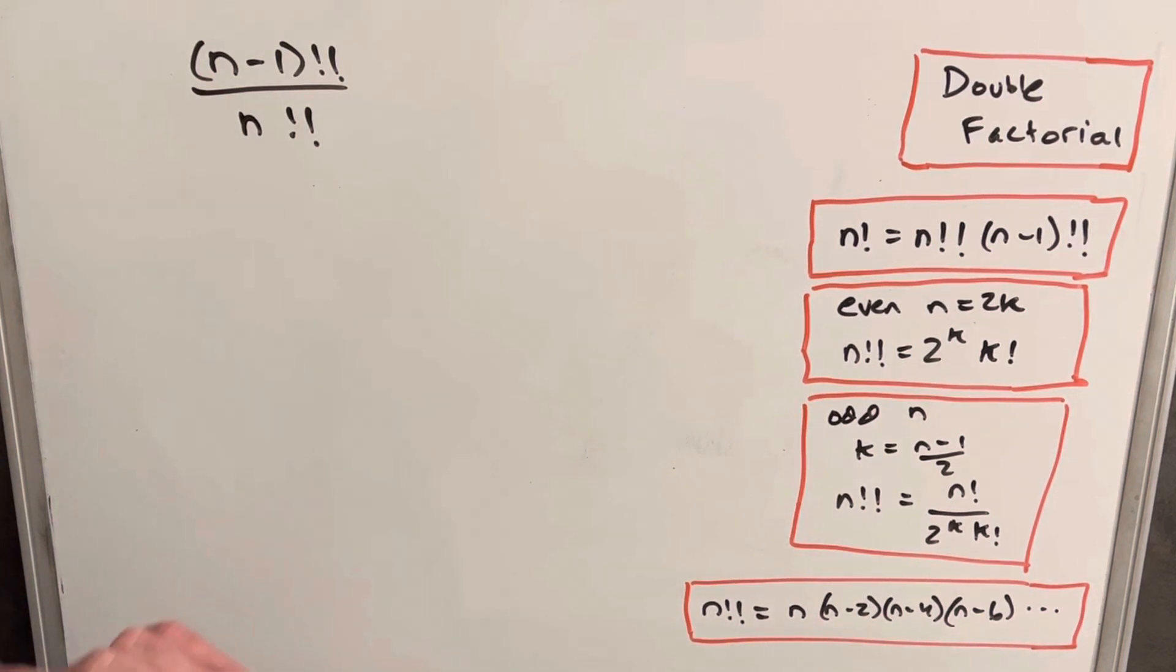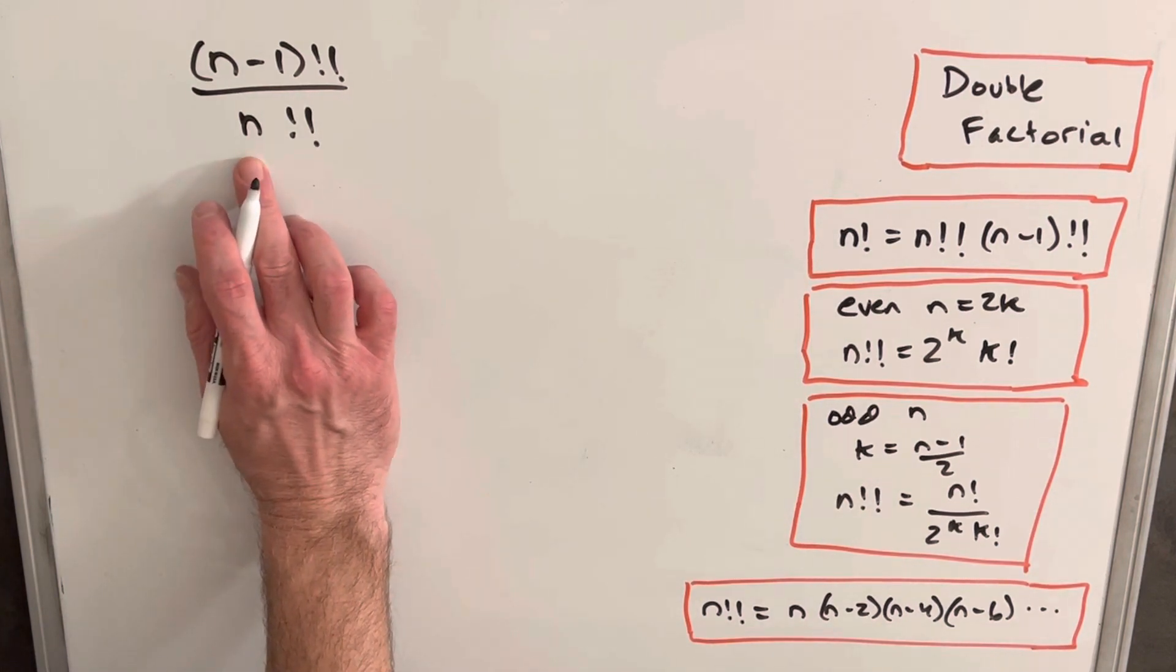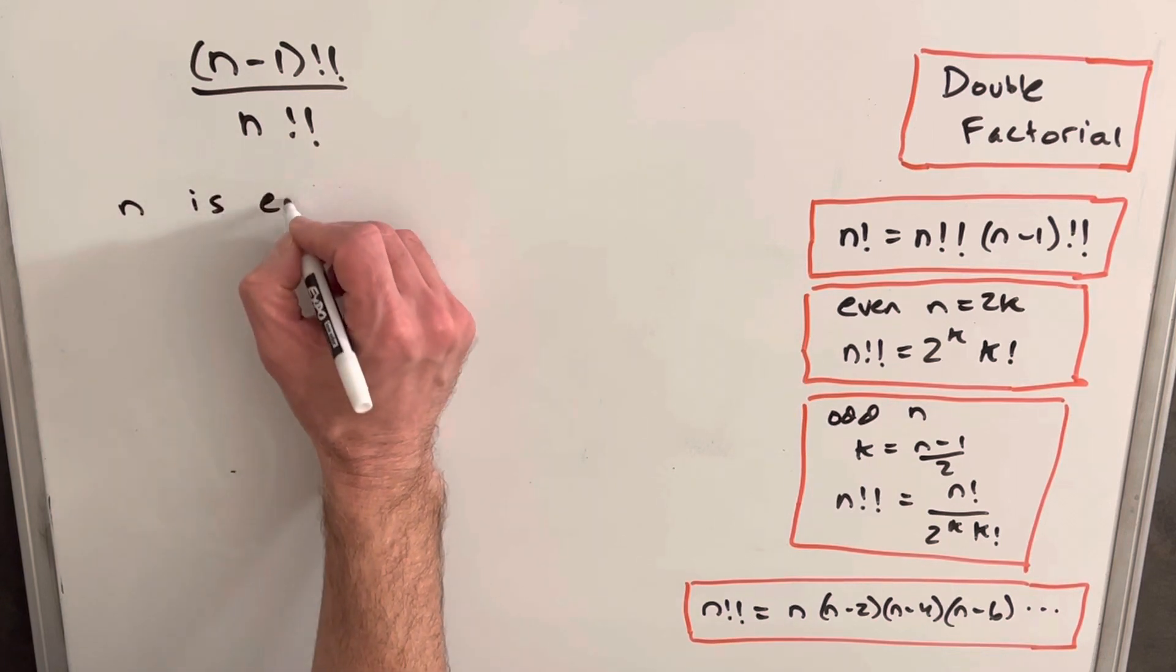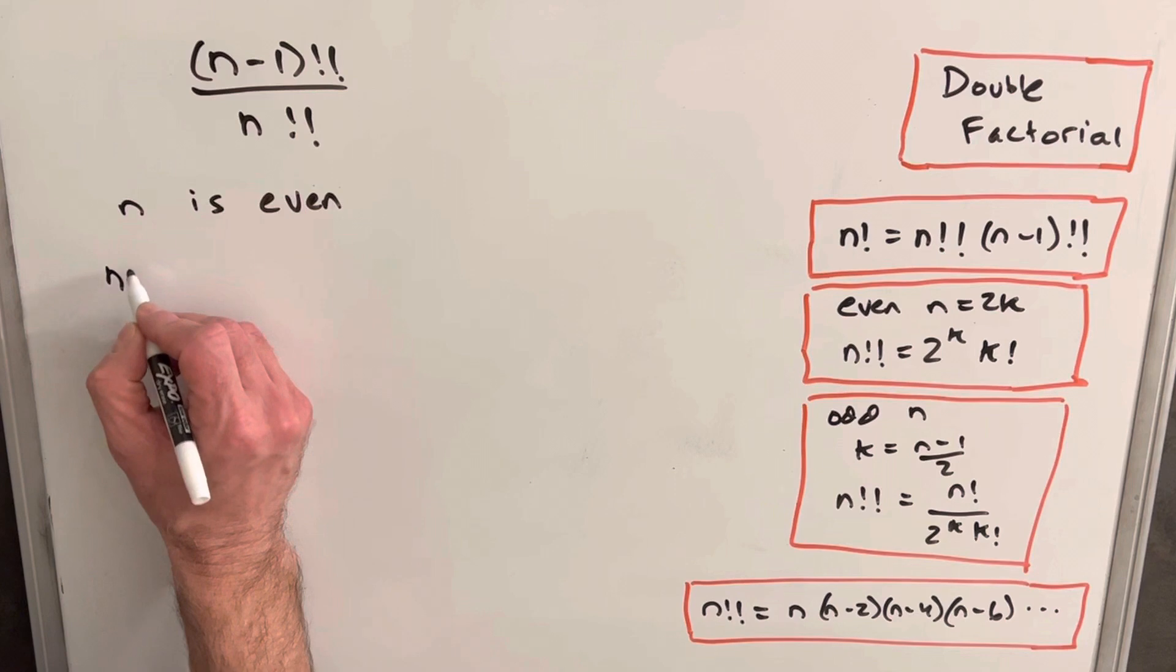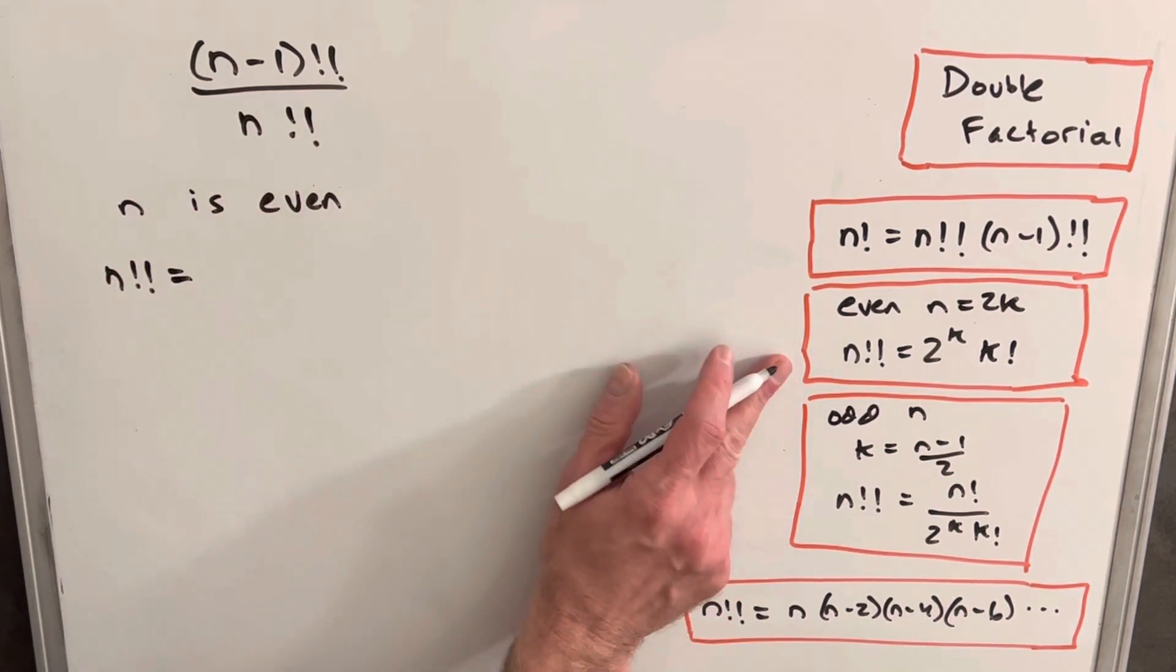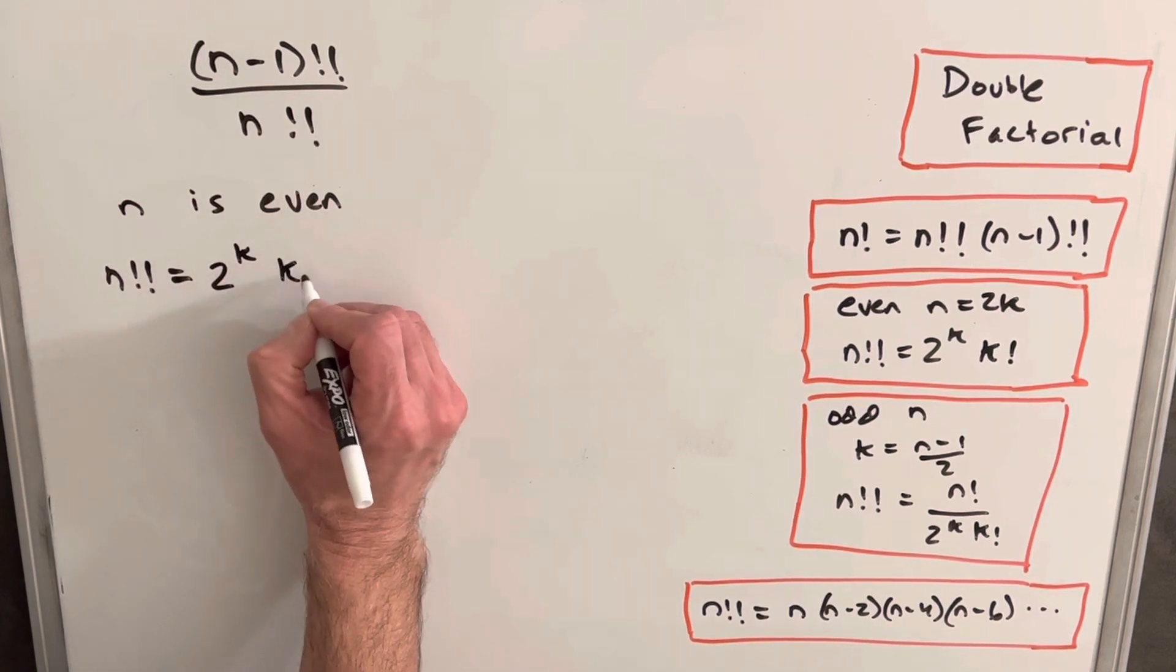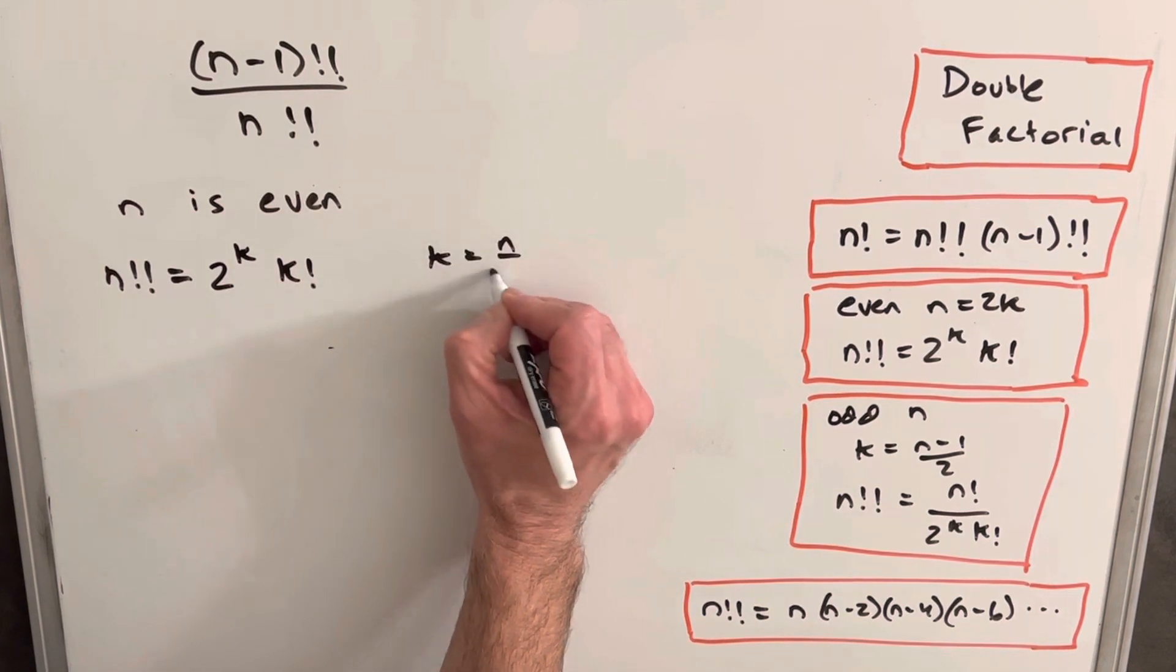Okay, to get started, we're going to need to do this in two cases because the expression is going to be different depending if n is odd or even. So to start, I'm going to assume this n is even. So if n is even, we can very easily get this expression for just n double factorial. We have this formula over here. So we can express this as 2 to the k times k factorial, where k equals n over 2.